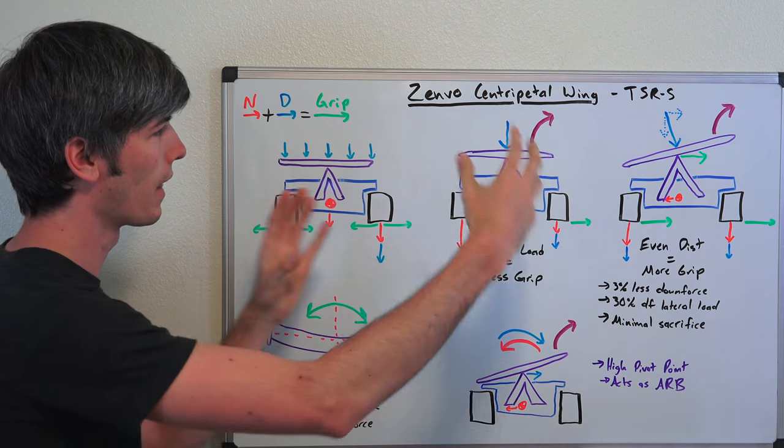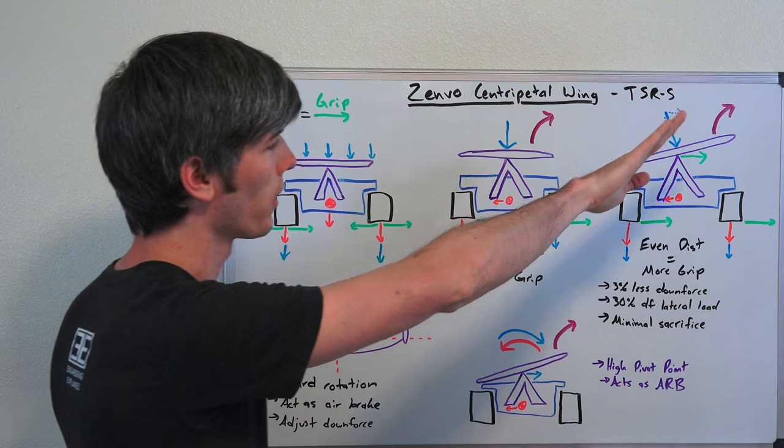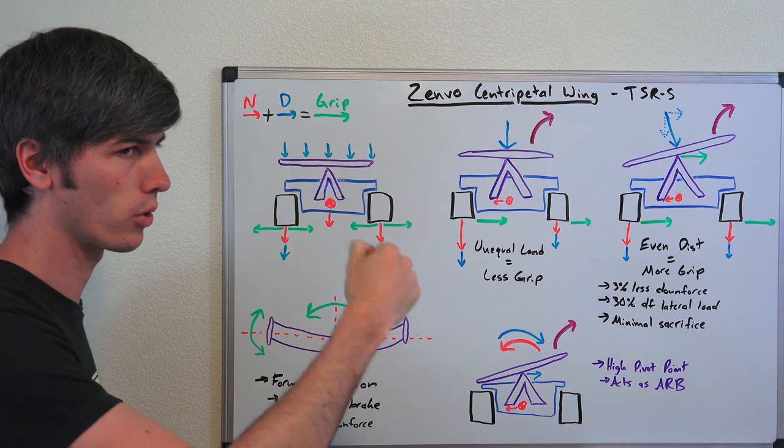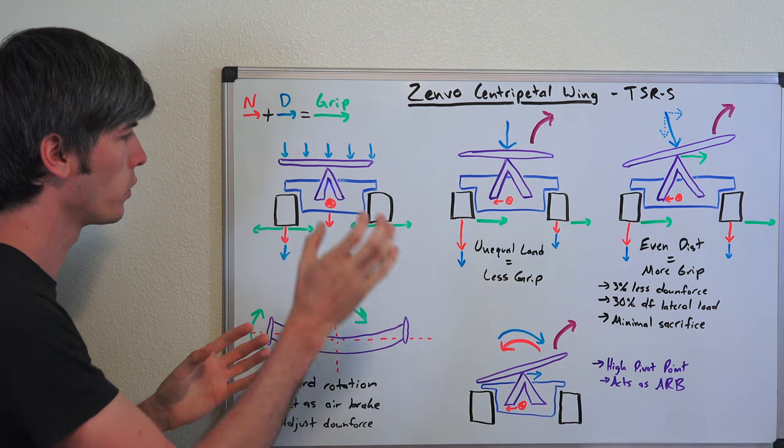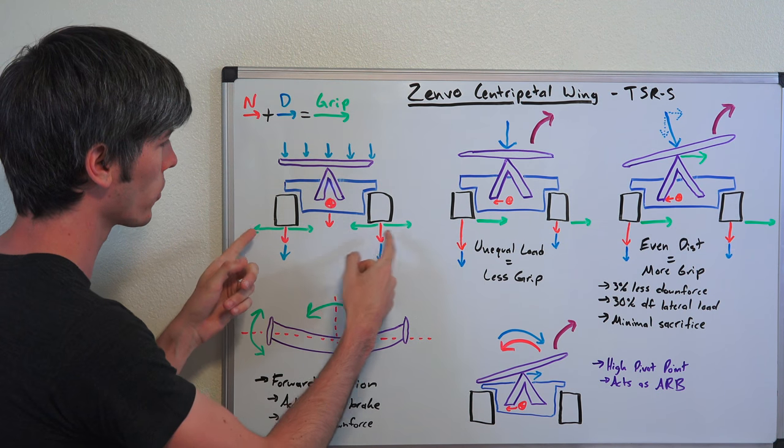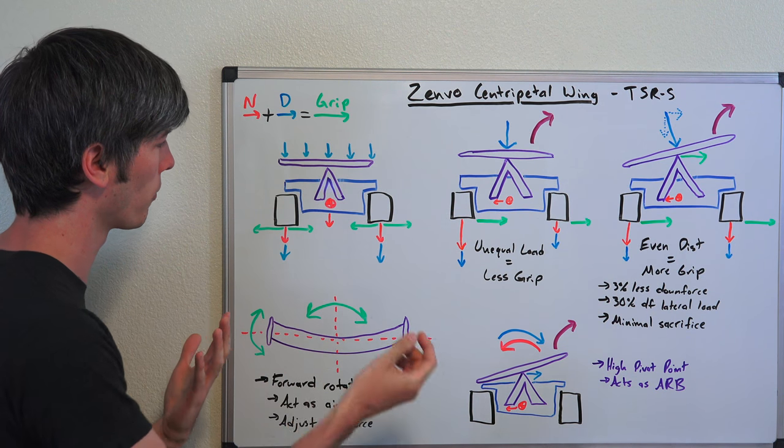So we're going to talk about grip and then how this scenario may be beneficial to be able to turn, tilt that wing to one side depending on which direction you're driving the car. And so starting off very simply, if you have a car, the grip that those tires have shown in green, how much lateral grip they're going to have is a combination of a couple forces.